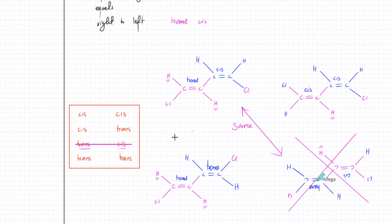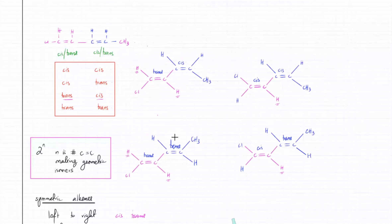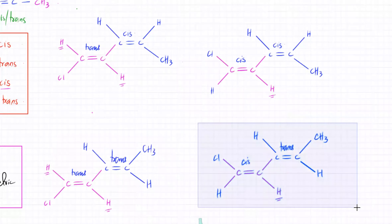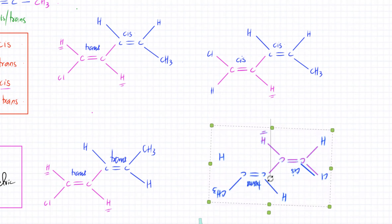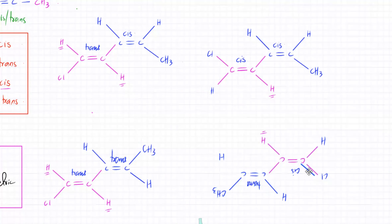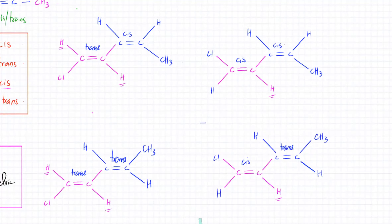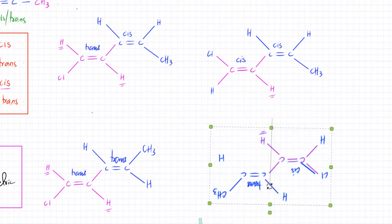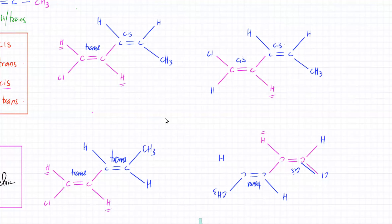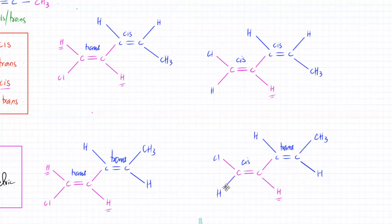For an unsymmetric alkene, all combinations are unique because flipping the molecule gives a different result — the left and right sides are obviously different. The 2^N formula works only for unsymmetric molecules. For symmetric alkenes, some combinations are no longer unique. The easiest way to identify symmetry is to draw a line in the middle of the molecule: if the right and left sides look exactly the same, it's symmetric; if they're different, it's unsymmetric.